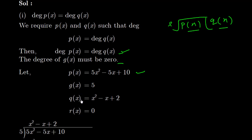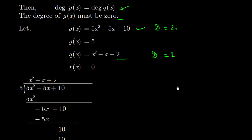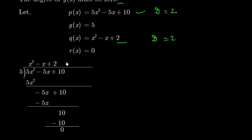Now we take Q(x), which is what we get when we divide. Notice the degree of P(x) is 2. Now let's try dividing. G(x) = 5 is our divisor. We will divide the polynomial by 5. To get 5x², we use x² × 5 = 5x², which cancels.